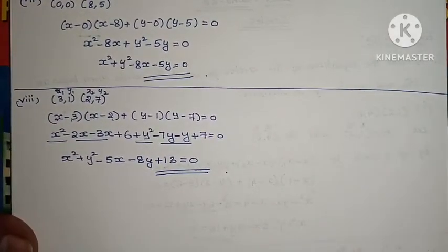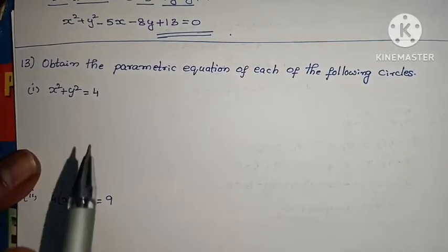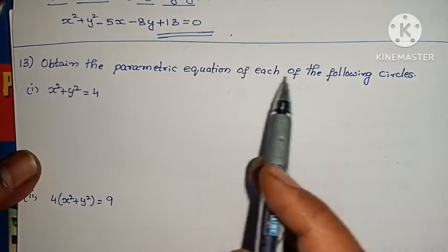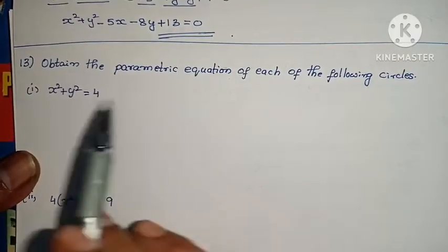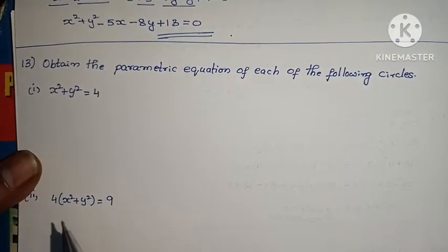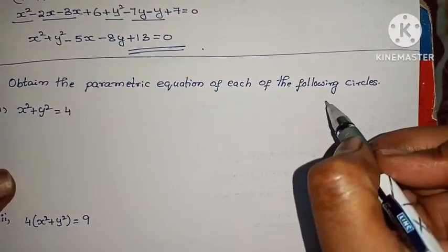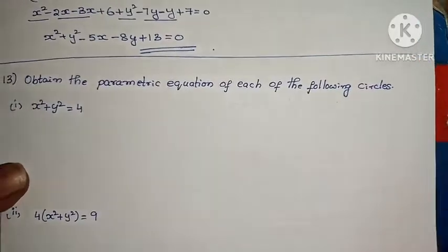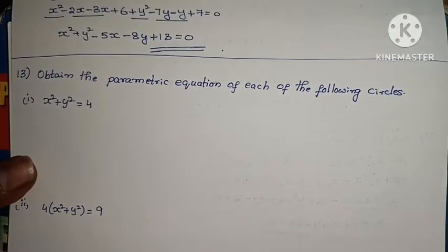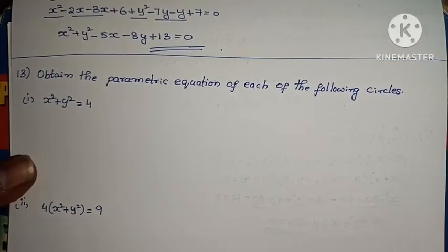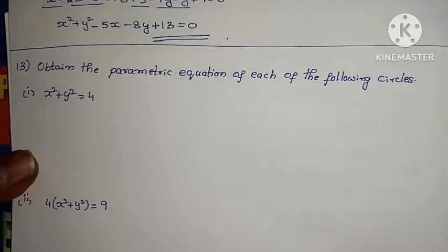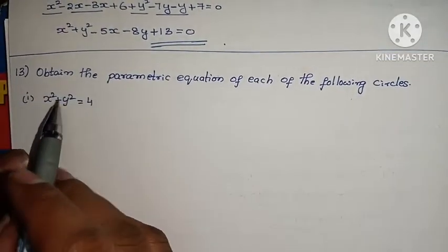Next is the 13th problem. The question asks us to obtain the parametric equation of each of the following circles. We need to write the parametric equations for the circles. The parametric equation formulas are: x equals h plus r cos theta, and y equals k plus r sin theta.